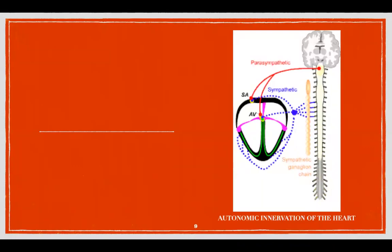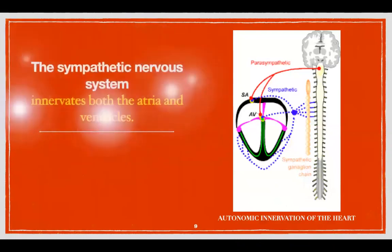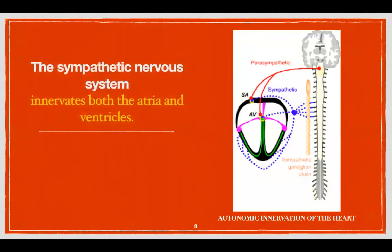Looking at the picture of the autonomic innervation of the heart: the sympathetic innervation emerges from the intermediolateral horn cells of the spinal cord, and the sympathetic nervous system innervates both the atria and the ventricles. So the sympathetic nervous system has the power not only to increase the heart rate but also to increase the force of ventricular contraction, or myocardial contractility.